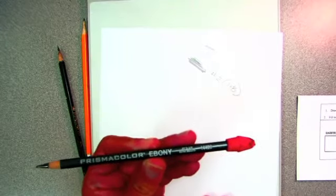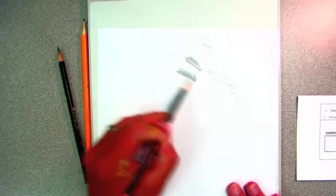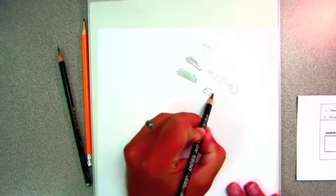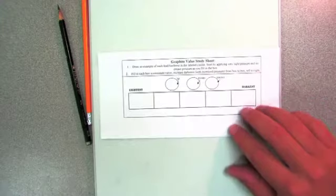And then this is an ebony pencil, which is in the range of about an 8B, and it is super super dark black. The reason it doesn't look super black right now is because of the shine from the light on the camera, but you'll notice when you experiment with it, it's really dark black.